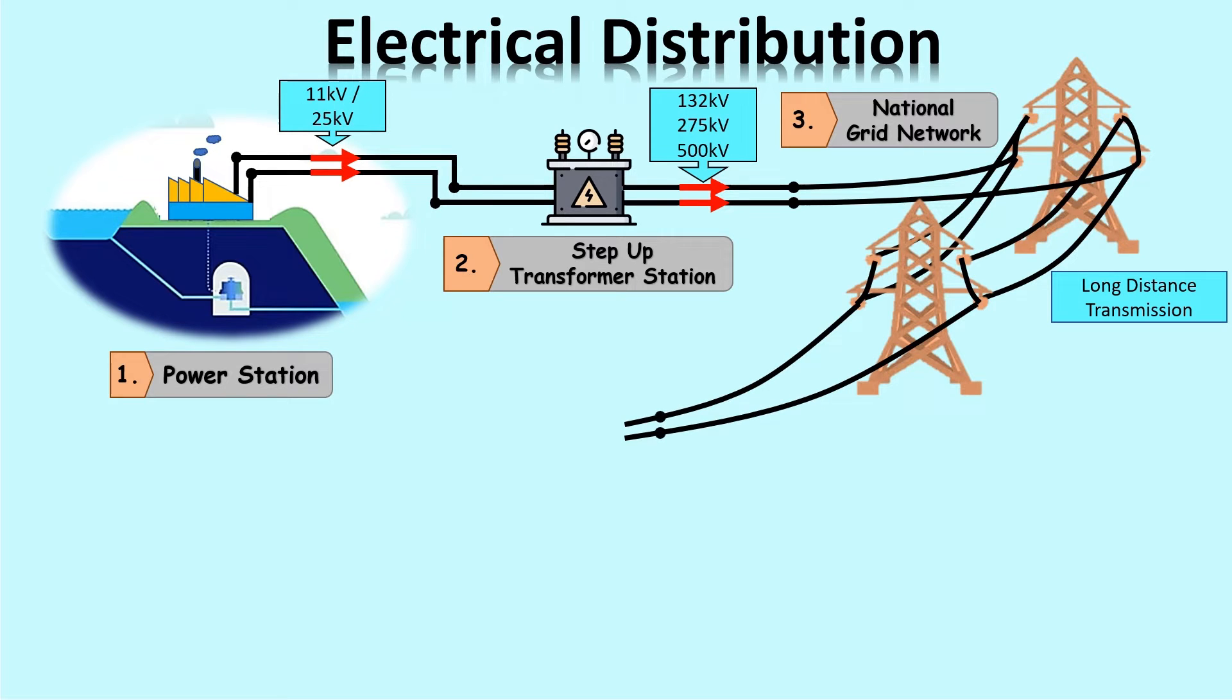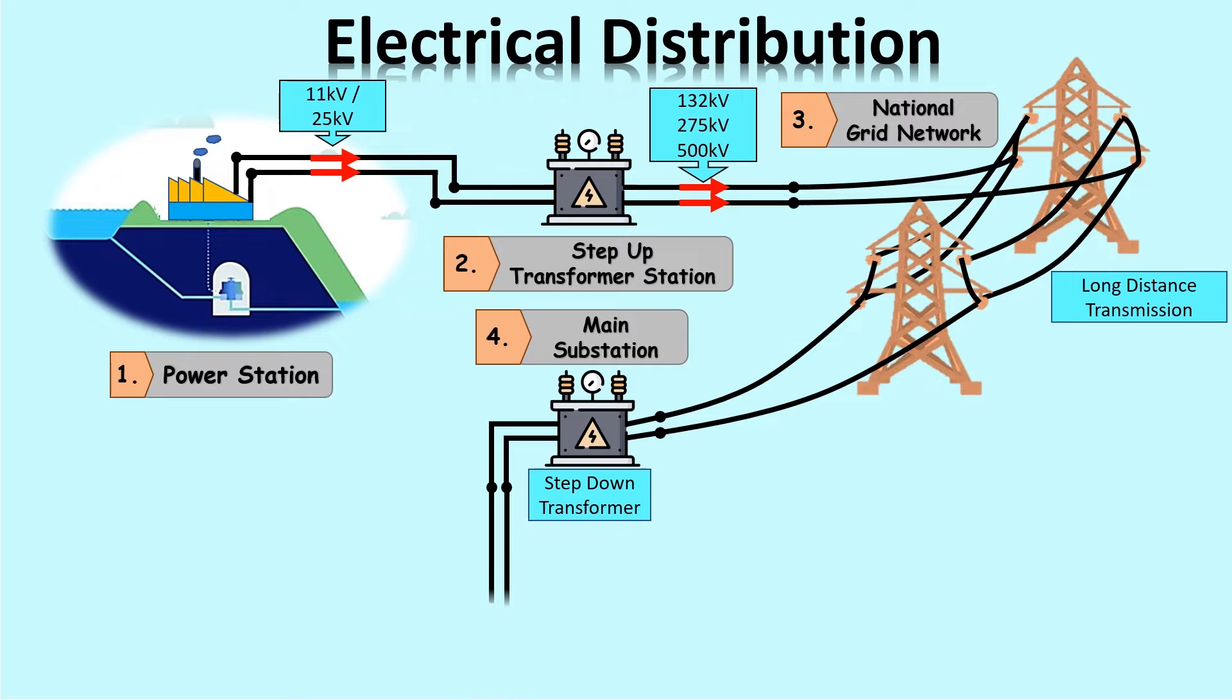After traveling a long distance, the electricity will again go through the transformer. This transformer is located at the main substation. The type of transformer is a step-down transformer. The voltage is reduced to 33 kilovolts after passing through this transformer.